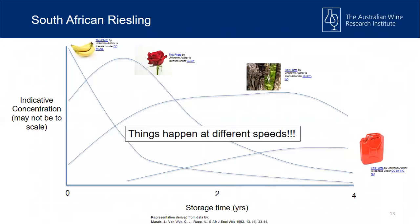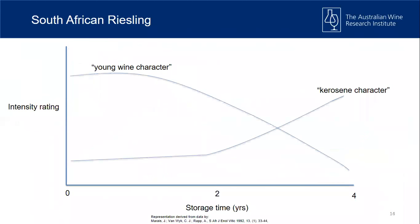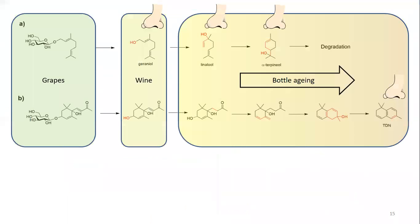The important thing is these changes happen at different speeds — it's not just that one slowly goes down as another comes up; they're all interacting and changing at different speeds at different times. In the same project they also got sensory scores — rating young wine character and kerosene character — and saw a general plateau and then reduction of young wine character, and then a slight increase in kerosene character, mirroring that fresh-fruity versus older-wine spectrum.